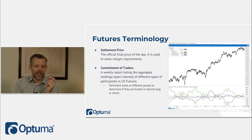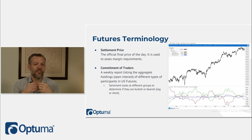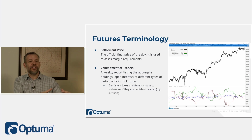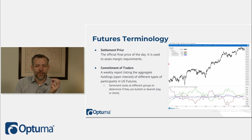The Commitment of Traders (COT) report is put out by the CFTC. All brokers and exchanges report to this government organization how many contracts are outstanding and by what class — whether it's farmers, large manufacturers using the goods, or speculators and money managers. The COT report breaks this into commercials, large speculators — anyone holding more than 250 contracts — and small speculators.